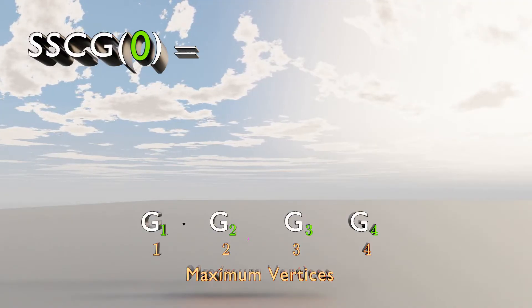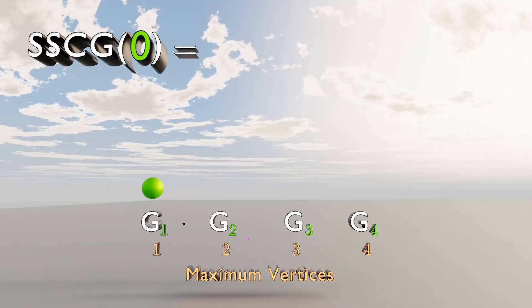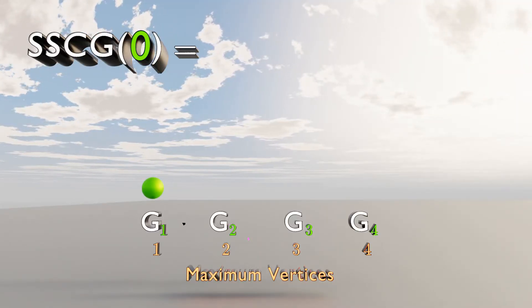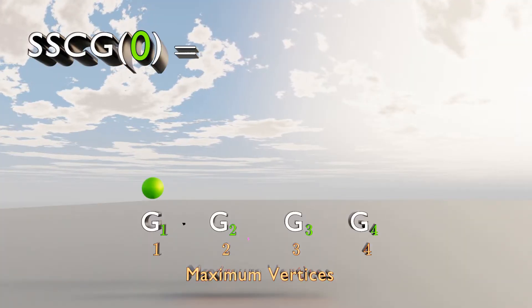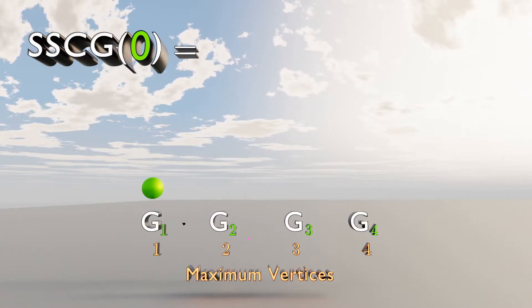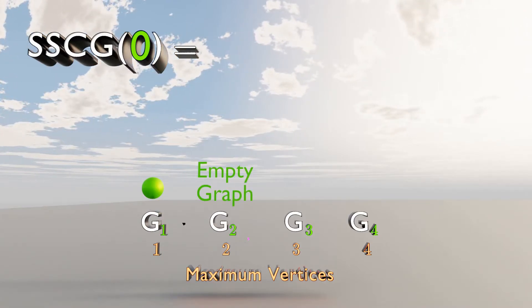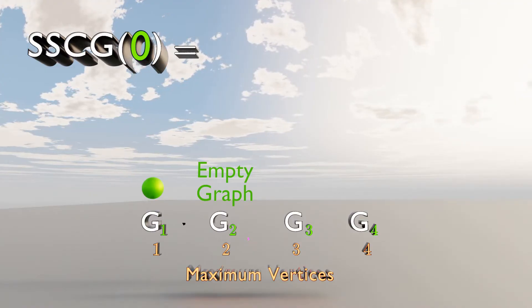So graph number 1 can have only 1 vertex. Graph number 2 cannot have any vertices, as graph number 1 will be a graph minor of any graph. So we can have an empty graph, and this is where SSCG0 ends. SSCG0 is equal to 2.